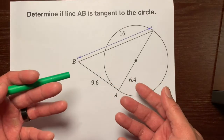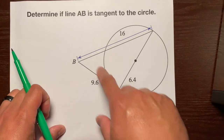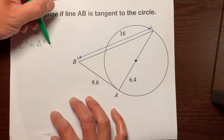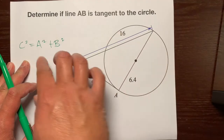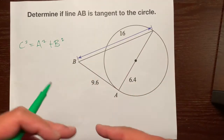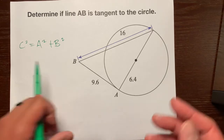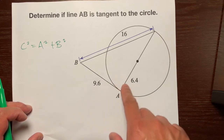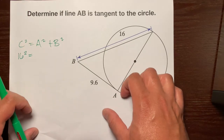Look at what they drew — they drew a triangle. We're trying to determine whether this is a right triangle. What formula or theorem can we use that requires a right triangle? Yes — the Pythagorean theorem. We're going to use the Pythagorean theorem to determine whether this is a right triangle. Remember, the Pythagorean theorem is C squared equals A squared plus B squared. If this Pythagorean theorem works, then this is a right triangle. If it's not, then this is not a tangent line — that means this touches the circle more than once.